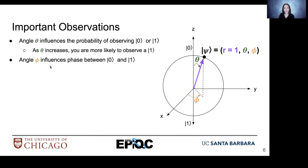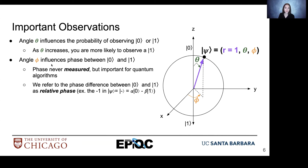Our angle phi influences the phase between ket0 and ket1. Phase is a little tricky — it's never measured, but it's really important for quantum information because constructive and destructive interference allows quantum informatics to have its power when implemented within algorithms. We refer to this phase difference as relative phase — that would be the negative sign in our negative superposition state, the relative phase between ket0 and ket1.